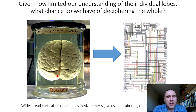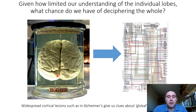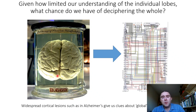We have a relatively limited understanding of the individual lobes and what they do, so what chance do we have of working out how the whole thing works? The truth is this is a fiendishly complex organ and it may be the case that we never fully understand how the brain works. However, certain diseases can give us clues about global functioning of the cerebral cortex — for example, Alzheimer's disease affects many widespread areas of the brain and has a particular clinical progression, so we may be able to learn quite a lot from studying Alzheimer's patients in terms of how the lobes and other regions work together as a whole.